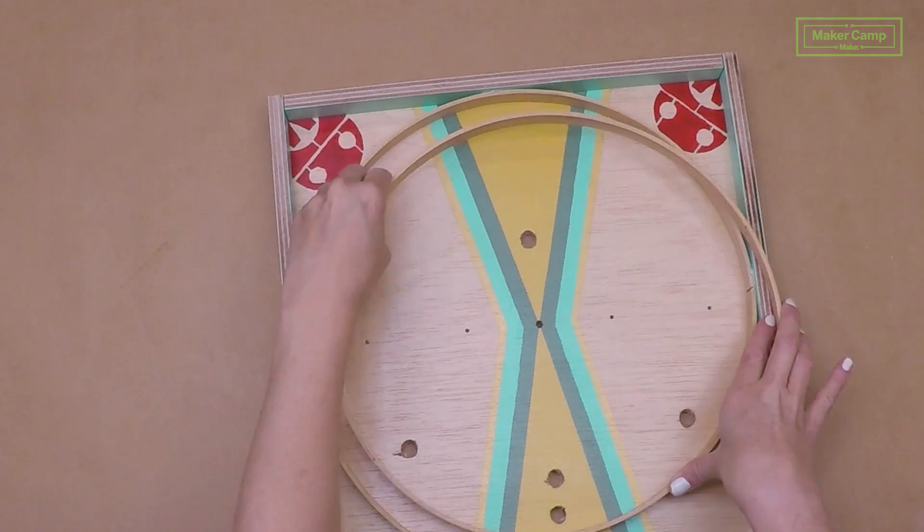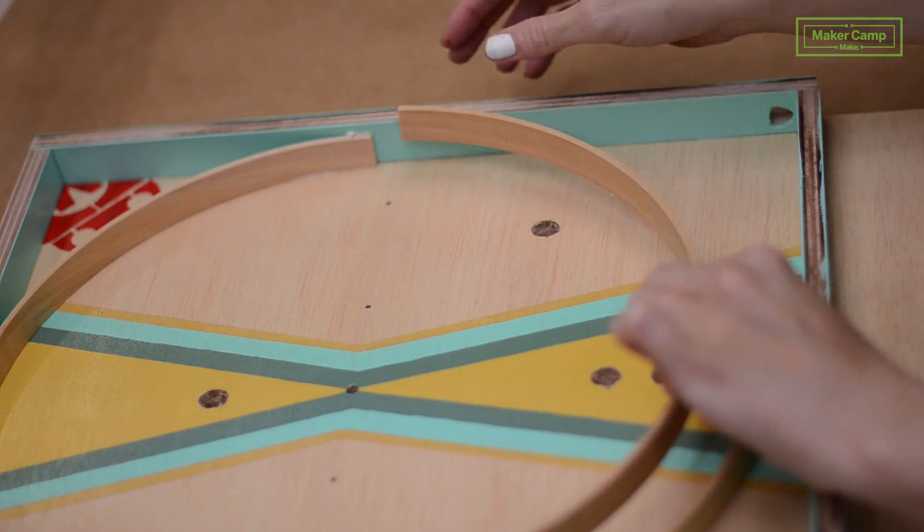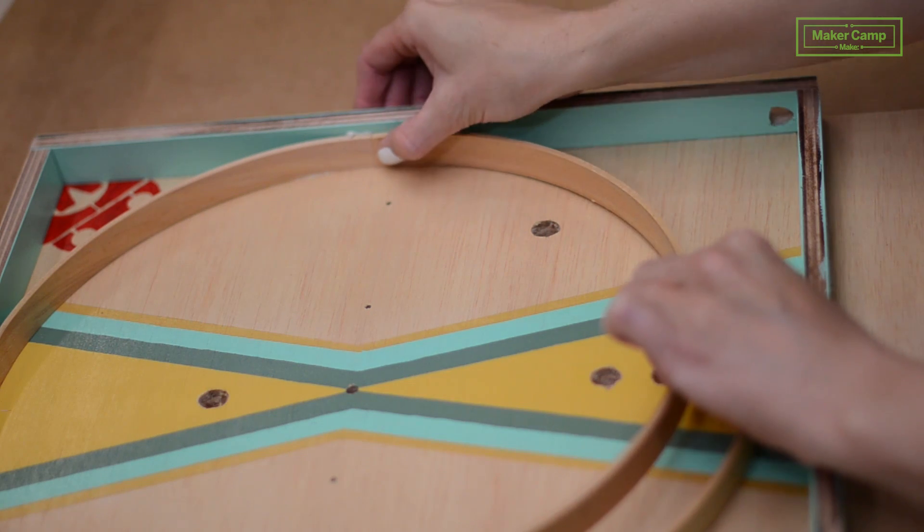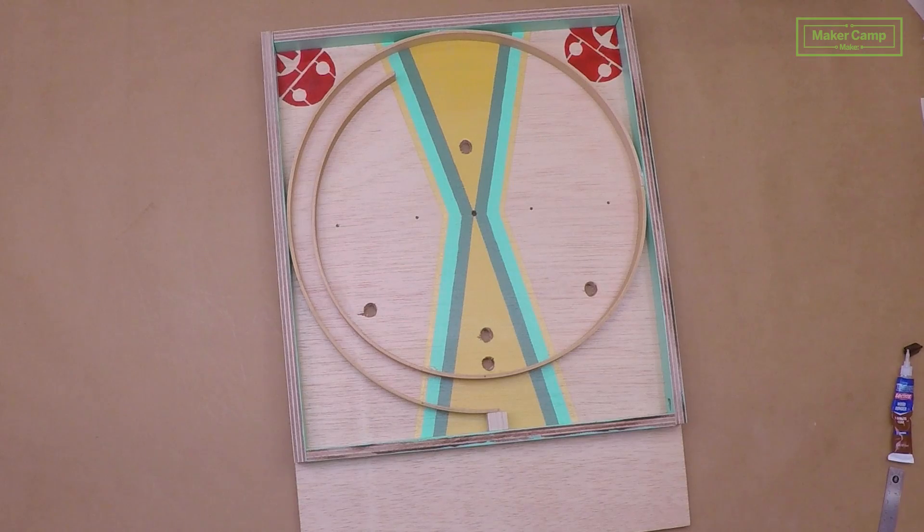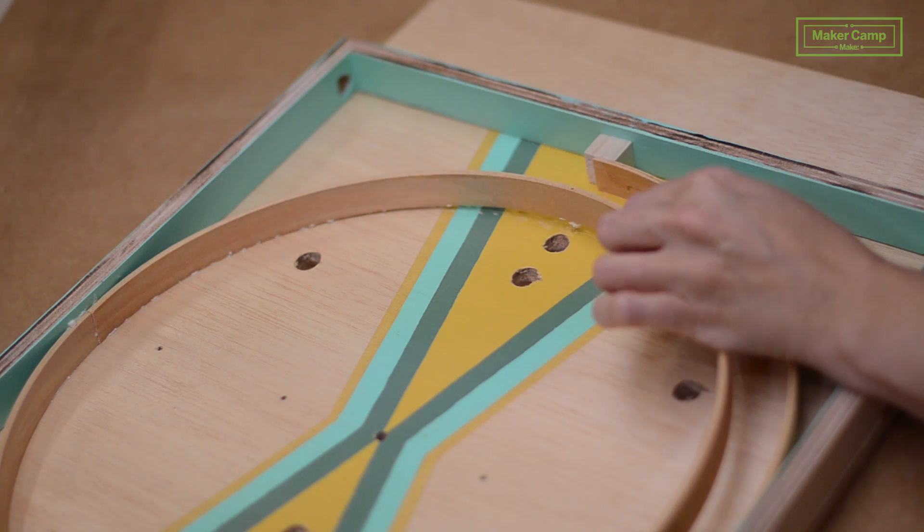Take one end of your inner embroidery hoop and line it up with the glued down right side of your outer embroidery hoop. We want this inner hoop to loop around and line up with the edge of the graphic. And when we find our spot, we'll cut it and we'll glue it down.